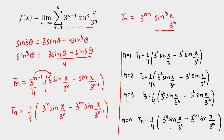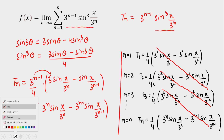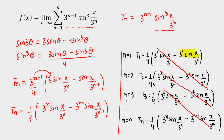When you add all these terms, you see that intermediate terms cancel: plus 3·sin(x/3) cancels with minus 3·sin(x/3), plus 3²·sin(x/3²) cancels with minus 3²·sin(x/3²), and so on. In the end, only two terms remain: 3^n·sin(x/3^n) and 3^0·sin(x/3^0), which is sin(x), with 1/4 outside.